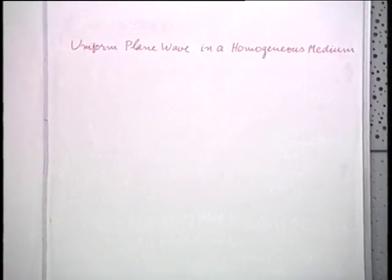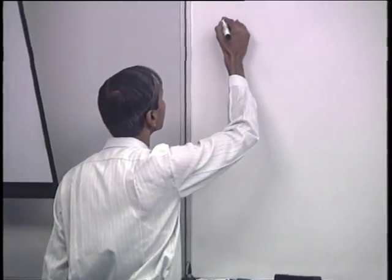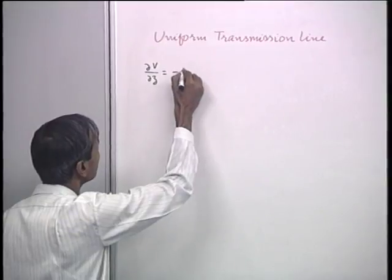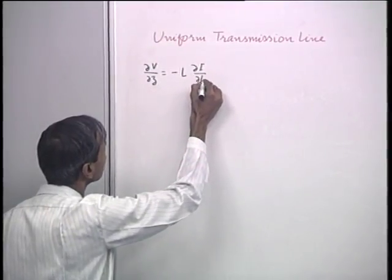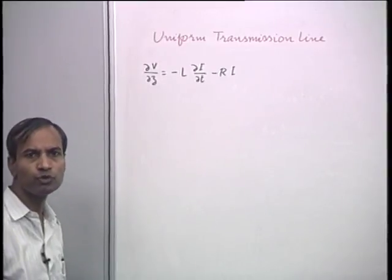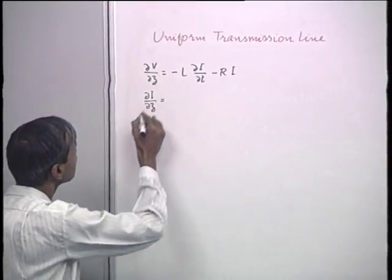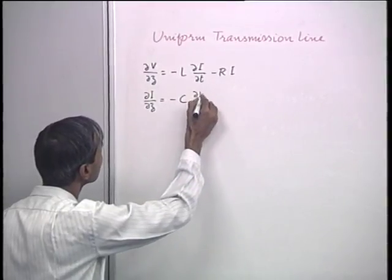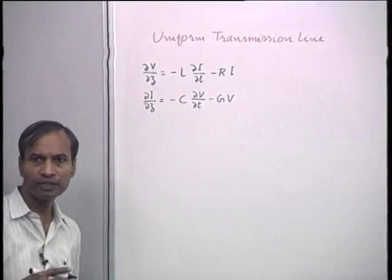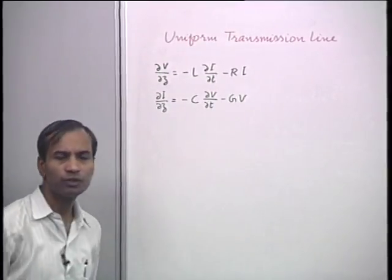For example, on the transmission line, considering the distributed parameter equivalent circuit for a small section of the transmission line, we wrote: ∂V/∂z = −L·∂I/∂t − R·I, and ∂I/∂z = −C·∂V/∂t − G·V. These are the equations governing the behavior of V and I in terms of the primary constants R, L, C, G of the transmission line.